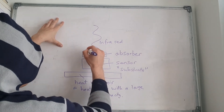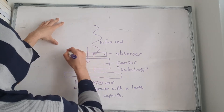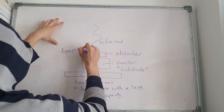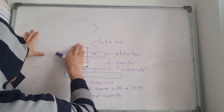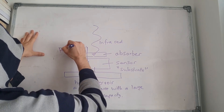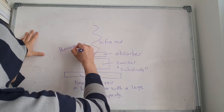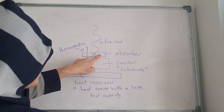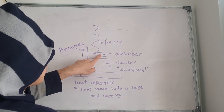Now when the infrared hits the absorber, there should be a temperature measurement. So we have a thermometer here — something that measures the temperature.